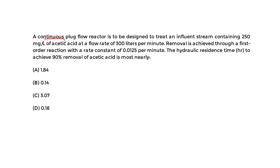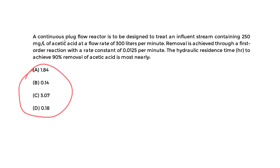For this one we're told a continuous plug flow reactor is to be designed to treat an influent stream containing 250 mg per liter of acetic acid at a flow rate of 300 liters per minute. Removal is achieved through a first order reaction with a rate constant of 0.0125 per minute. The hydraulic residence time in hours to achieve 90% removal of acetic acid is most nearly what?